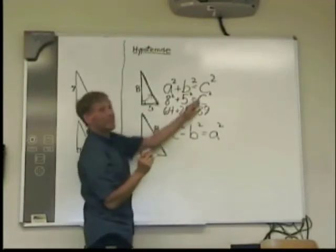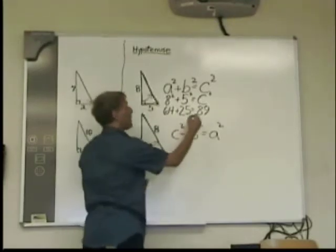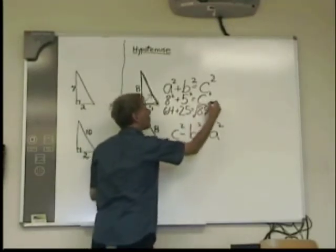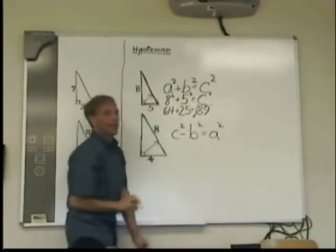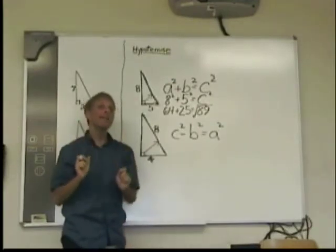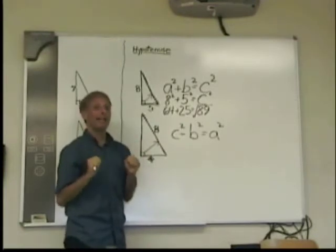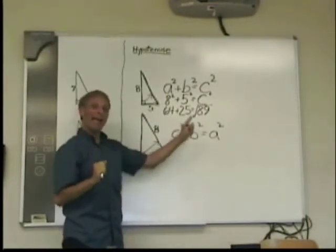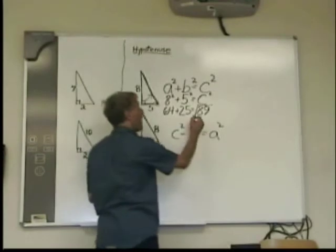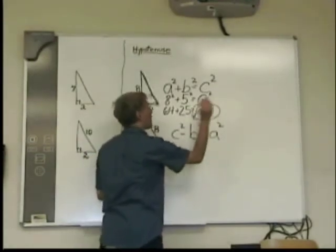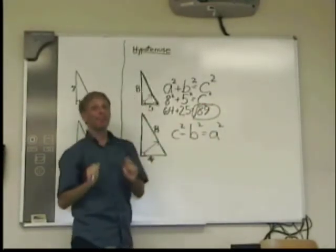And my final step, since this is the square of C, is I square root the answer. Now, you may not be done yet. You have to see if this radical could be simplified. I'll tell you now, 89 can't. So that would be your final answer. If it could, you simplify it.